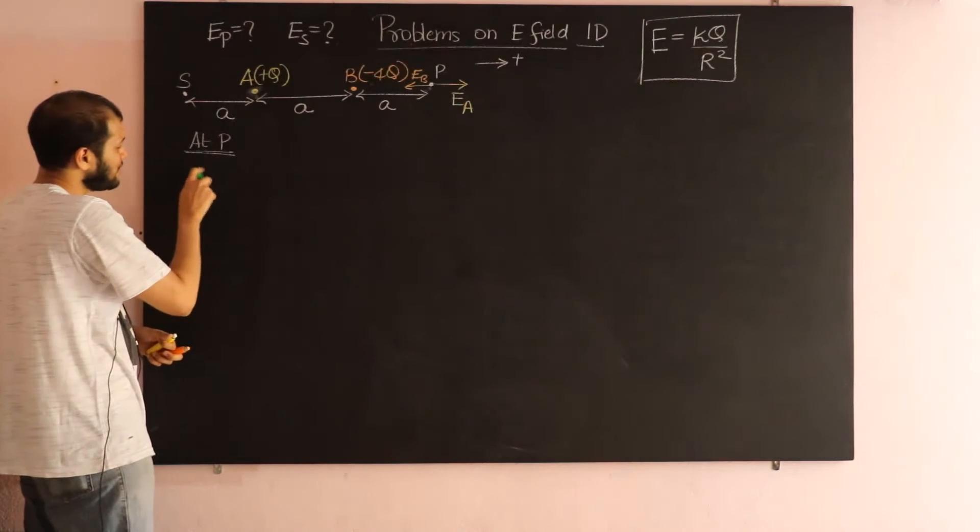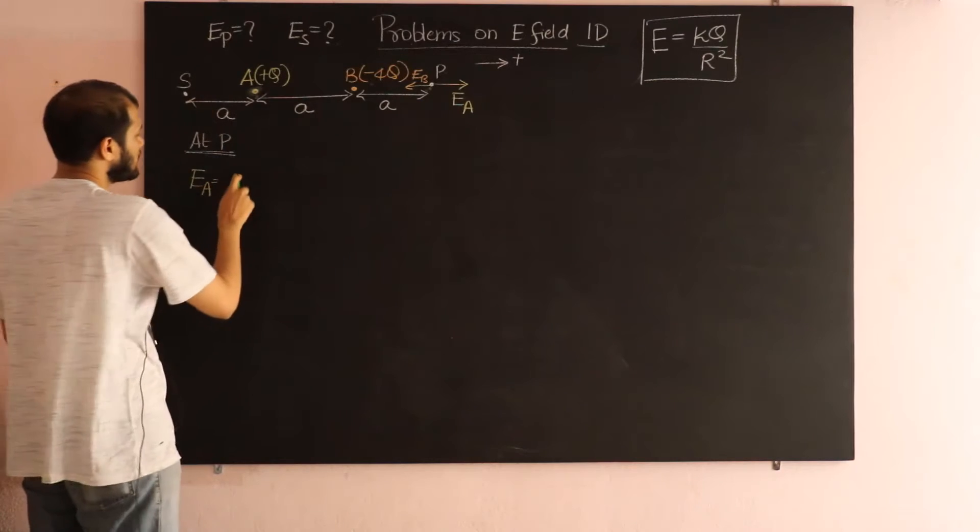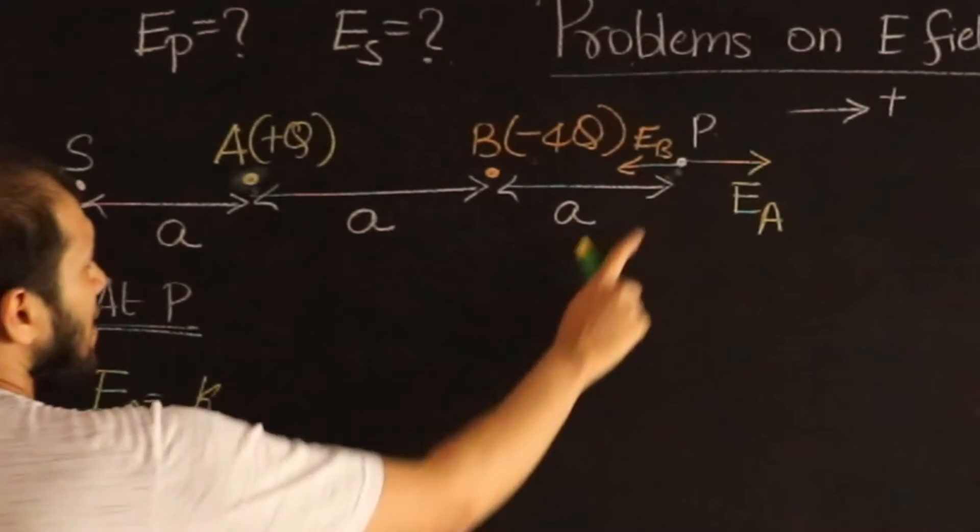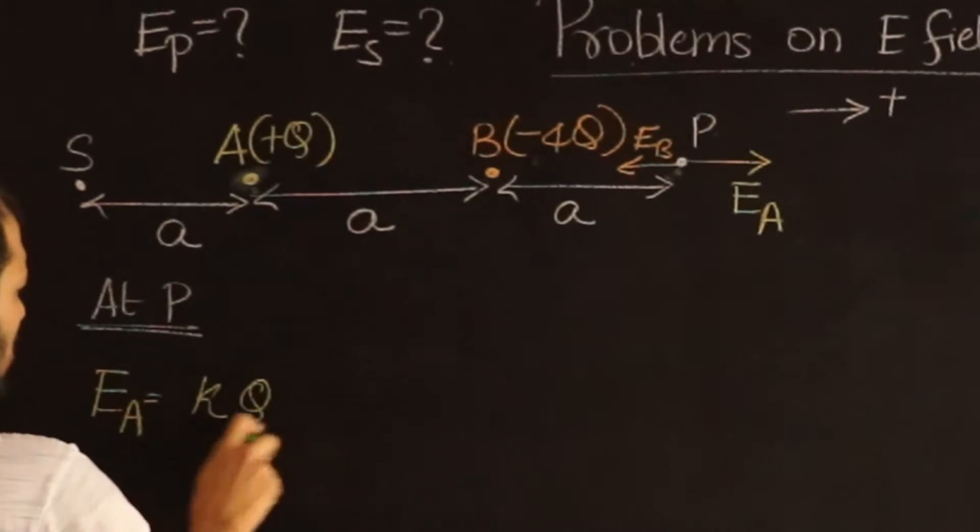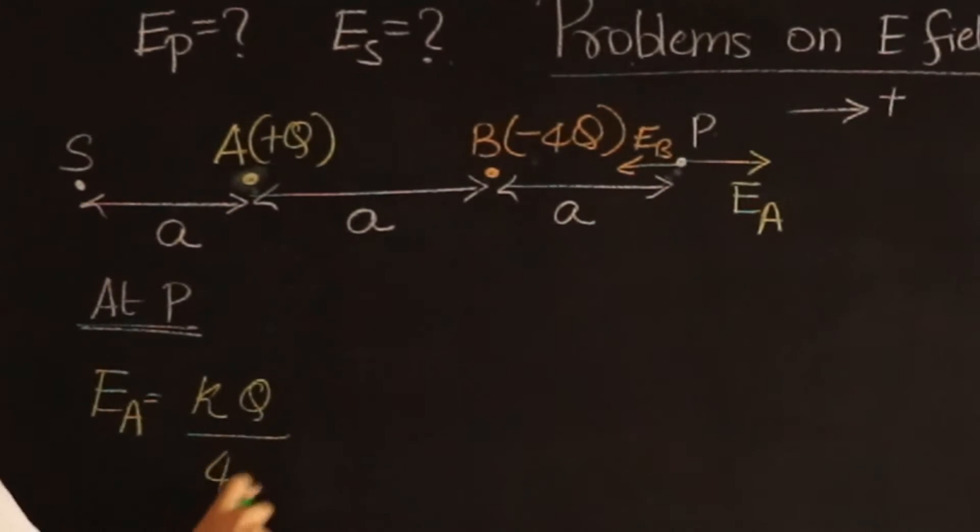So the magnitude E_A, I'm going to use the Coulomb's law, kq by r square, so it's k into q, which is q, divided by r, which is 2a, the whole square, gives us 4a square.